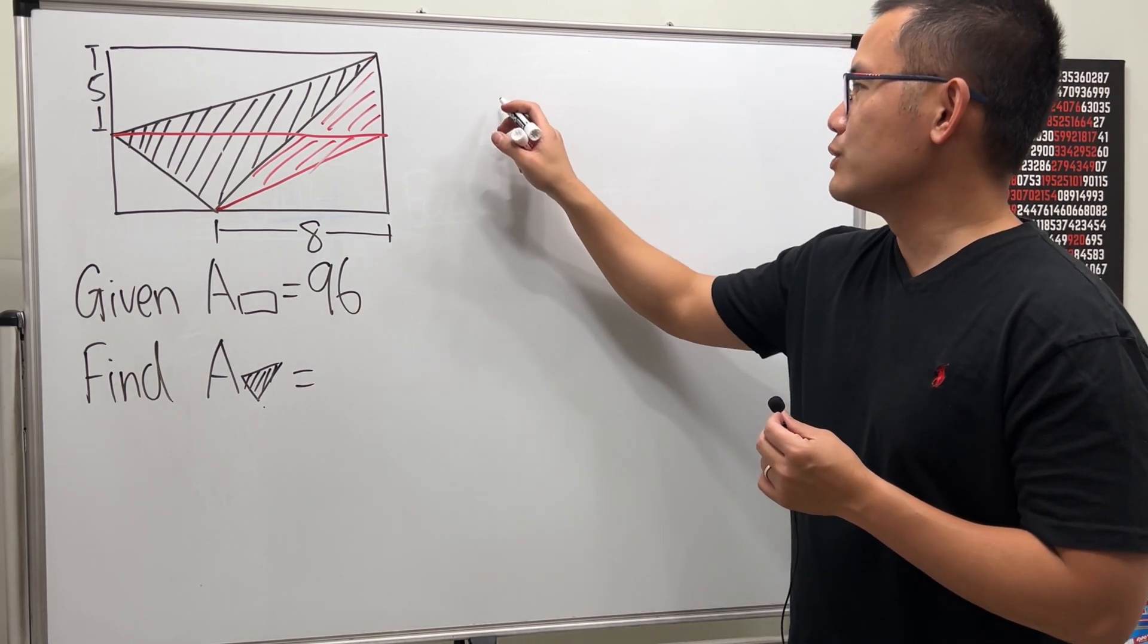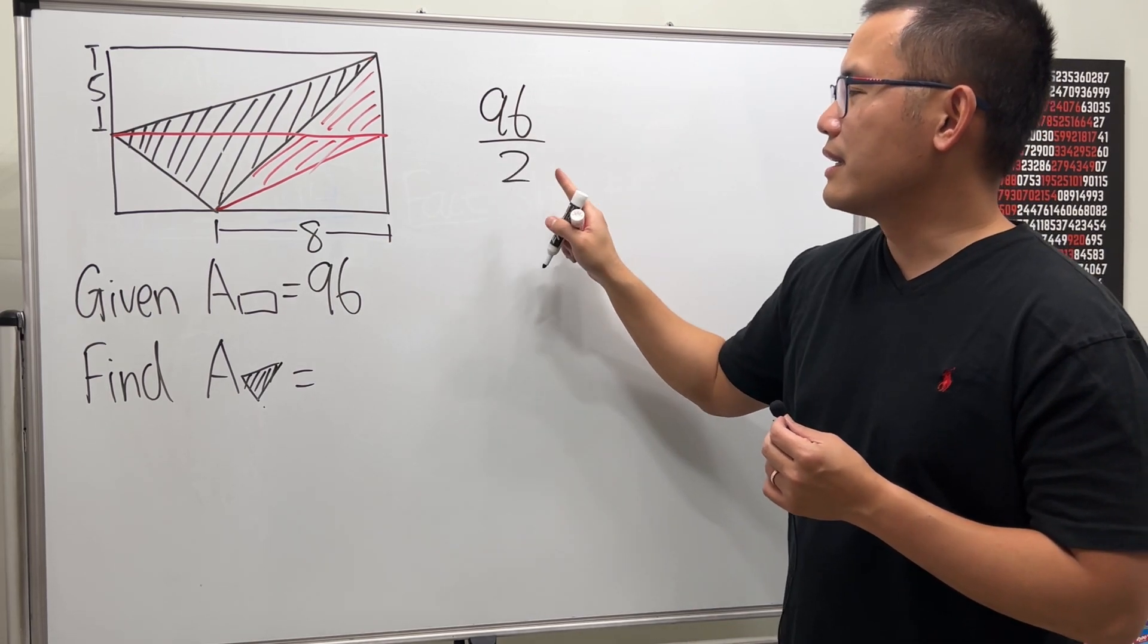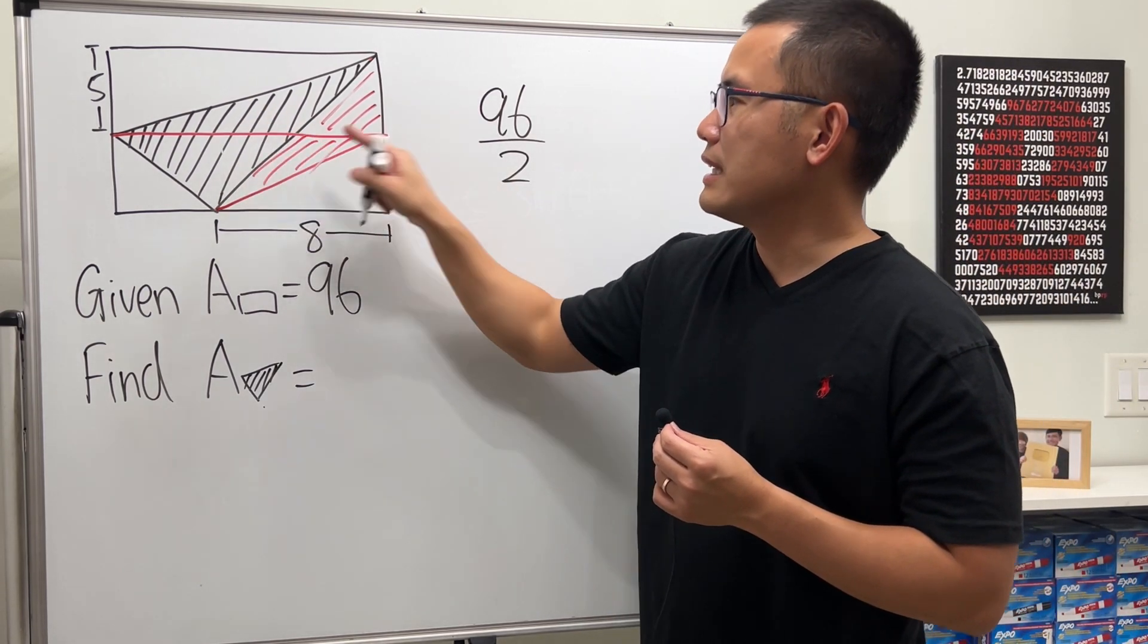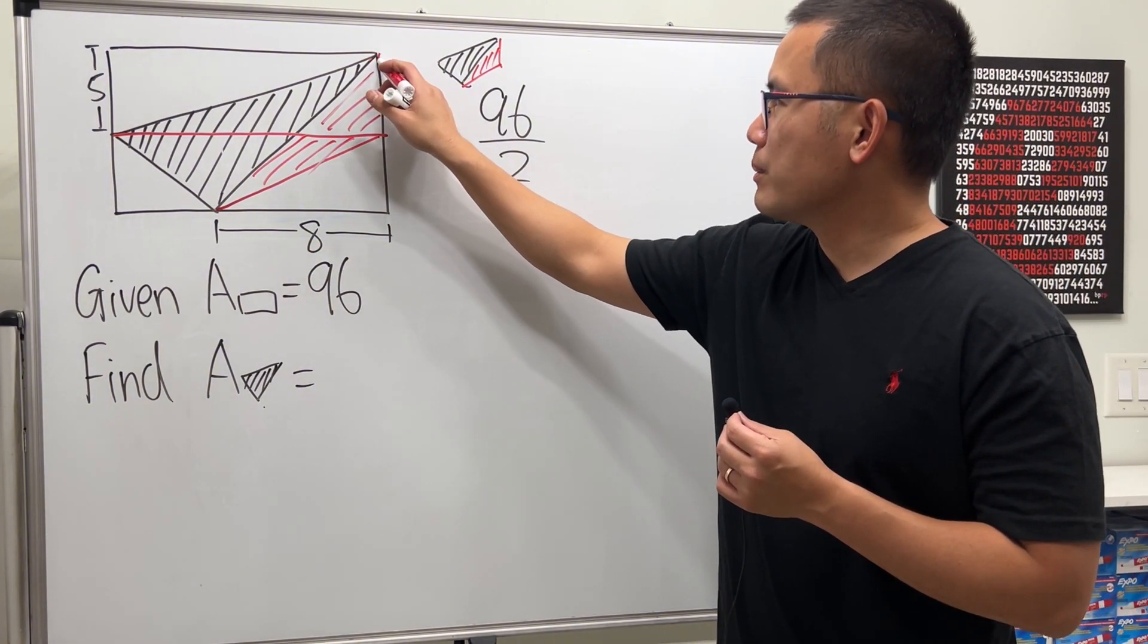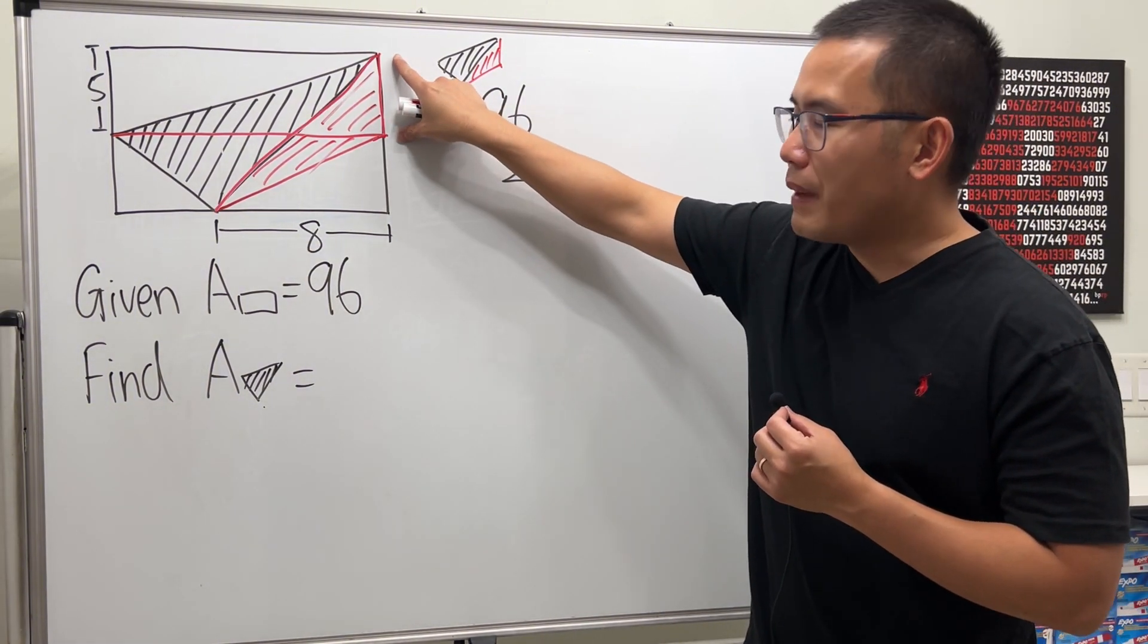So firstly we can just do 96 divided by 2. And again this is this plus that. Now is it possible for us to figure out the red part though? Because we do know the base.